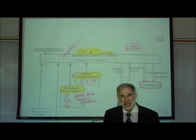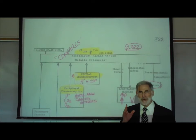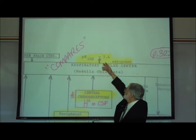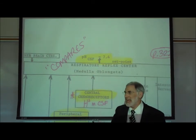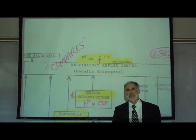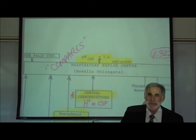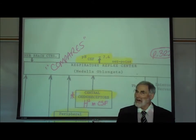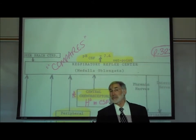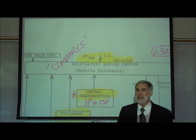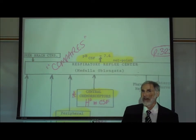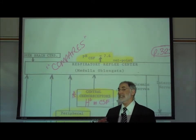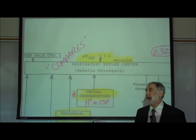What is astonishing is that the principal function of the respiratory reflex center is to regulate or maintain the pH of the cerebrospinal fluid around the brain at a pH of 7.4. Most of us would have presumed the most important function is to regulate our oxygen levels, but in fact the single most important factor is the acidity or pH of our body fluids.